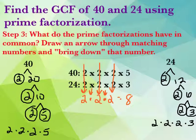So then we'd say that our final answer is the GCF of 40 and 24 is 8. Please remember that you do have to write that in a complete sentence. Again, the GCF of 40 and 24 is 8.